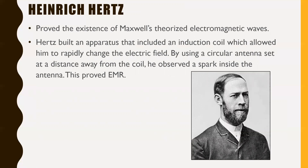Heinrich Hertz — the same person the frequency unit is named after — proved the existence of Maxwell's theorized electromagnetic waves. Hertz built an apparatus including an induction coil that allowed him to rapidly change an electric field. By using a circular antenna set at a distance from the coil, he observed a spark inside the antenna. This showed that some action was occurring at a distance, and he concluded it had to be caused by electromagnetic waves propagating through space.